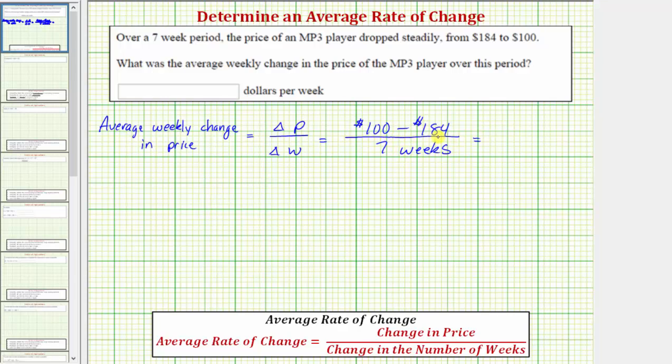100 minus $184 is equal to negative 84, so the change in price is negative $84, and we still have divided by seven weeks.